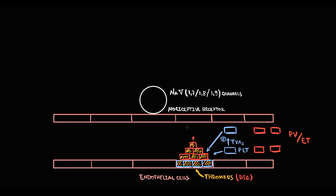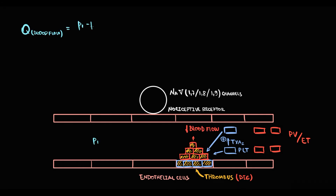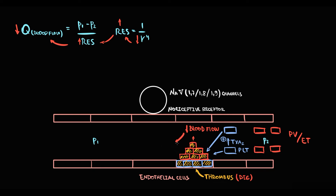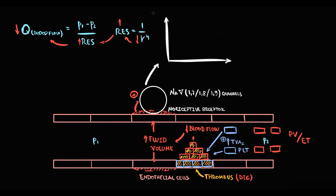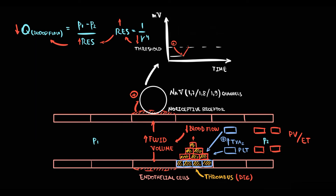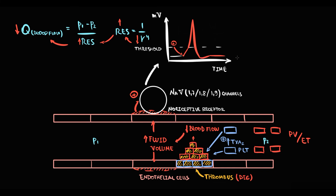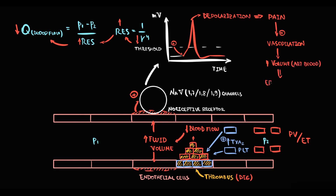The major problem is that a bigger thrombus causes obstruction of the blood vessel, decreasing blood flow through that region. With decreasing radius, resistance increases and blood flow decreases. Fluid begins to accumulate proximal to the obstruction, causing overt distension of the vessel wall, which stimulates nociceptive receptors. Their significant stimulation generates an electric stimulus that reaches the threshold of excitation, provoking an action potential — depolarization of nociceptive receptors triggers pain. Pain provokes vasodilation, blood inflows to the affected region, increasing arterial blood volume, causing erythema and warmth.